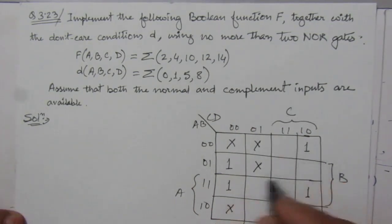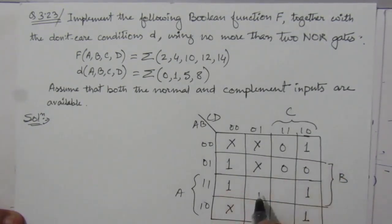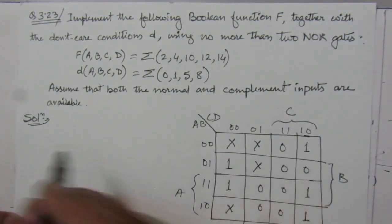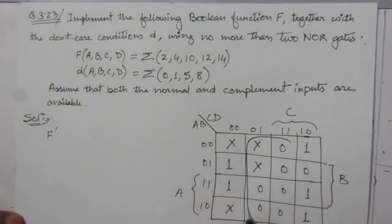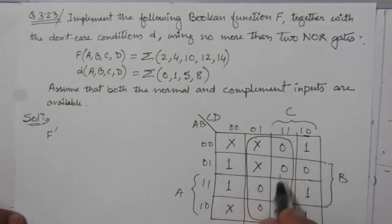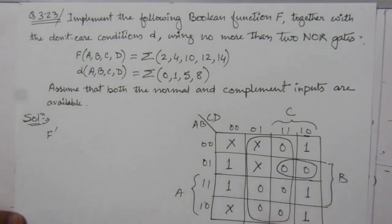We will put the other empty boxes with 0. If we consider the 0 values, we will get the F complement function. So these 0s are combined and we are left with this 0. We will put a combination here. So we will have only 2 terms.